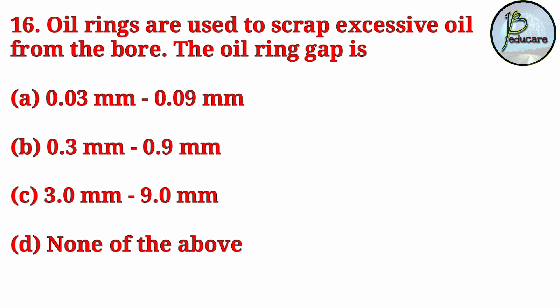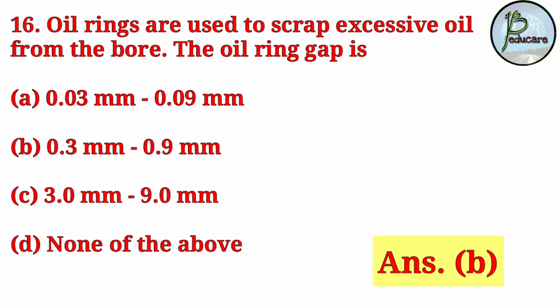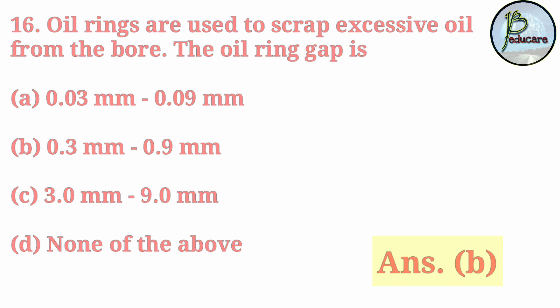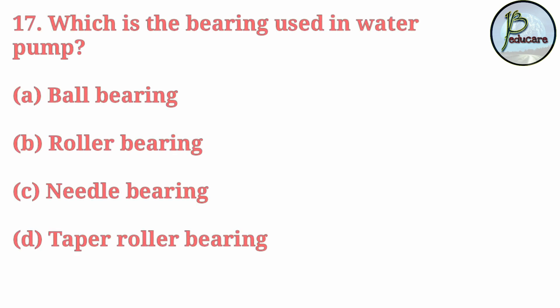Oil rings are used to scrape excessive oil from the bore. The oil ring gap is? What is the measurement of the oil ring gap? The correct answer is Answer B — 0.3 mm to 0.9 mm.